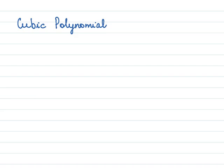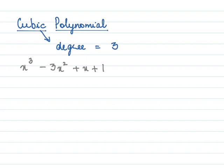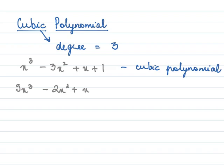In this lesson we learn about cubic polynomials. A polynomial is said to be cubic if its degree is equal to 3. For example, a polynomial where the highest power is 3 is a cubic polynomial. Here is another example of degree 3, and x³ + 1 is also a cubic polynomial because its degree is 3. All polynomials with degree 3 are called cubic polynomials.